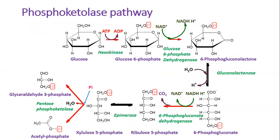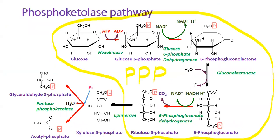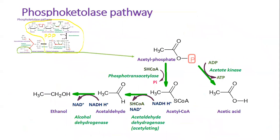In some cases, the phosphoketolase pathway can be considered as an offshoot of the pentose phosphate pathway that bypasses its non-oxidative branch. It produces glyceraldehyde-3-phosphate and acetyl phosphate from xylulose-5-phosphate. Acetyl phosphate formed in this reaction serves as an easily assimilated energy source — it can be used to produce ATP and acetate in the reaction catalyzed by acetate kinase.